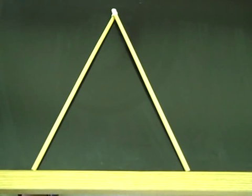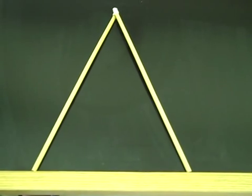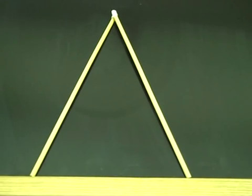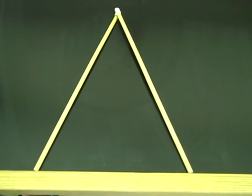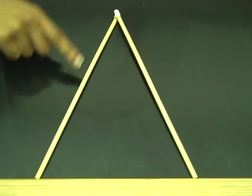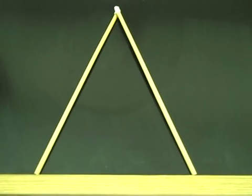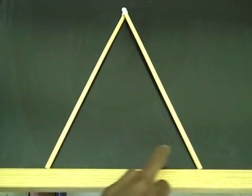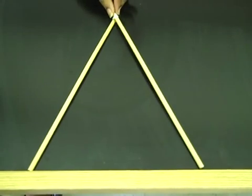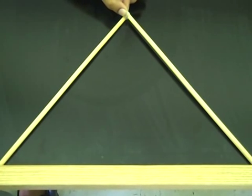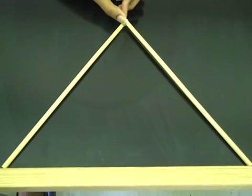Now, before we can prove the theorem, we need to remind you of a couple of geometric facts. The first one is that if you have an isosceles triangle where the two sides are congruent, then it's true that the angles opposite those sides are also congruent. No matter what the shape of the isosceles triangle, the two angles are going to be congruent.